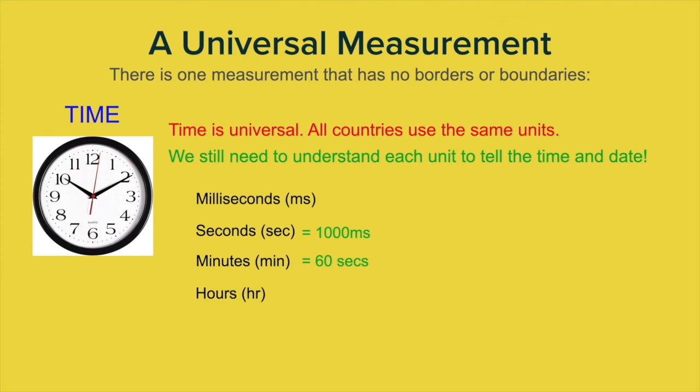What about hours? How many minutes go into an hour? Yeah, it's also 60 minutes. So 60 seconds into a minute and 60 minutes into an hour. Then we have our days. How many hours go into a day? Yeah, of course, it's 24 hours. 24 hours in a day.